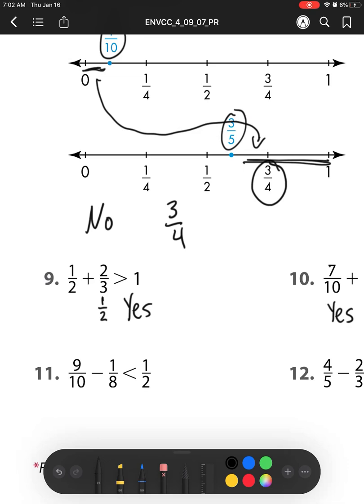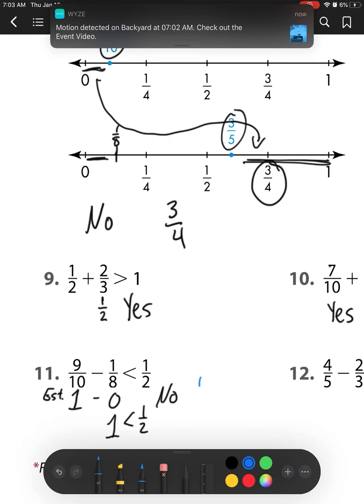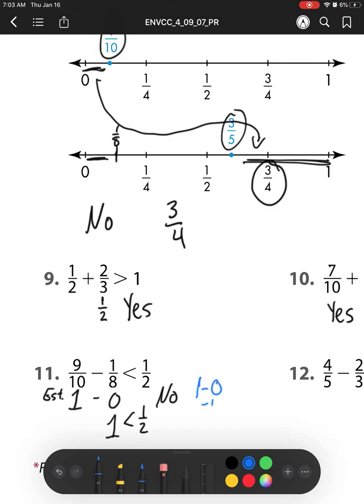Here, we have 9 tenths minus 1 eighth is less than 1 half. Well, this is almost 1 whole—so this is my estimation. And this is almost 0. 1 eighth is extremely close to 0. If I look up at this number line right here, this would be about 1 eighth. So I can see I'm only subtracting that much from almost a whole. So my answer should be about 1 whole. And I know that 1 whole is not less than 1 half. So this one is no, it is not reasonable. And then what I have for my estimation is this is close to 1 whole, and this is close to either 0 or 1 fourth. It's right in the middle. So I could either take my estimation to be 1 whole, or I could have it be 3 fourths. Either one is acceptable.